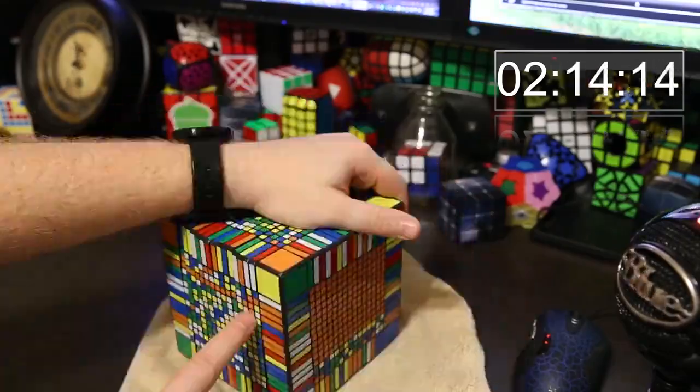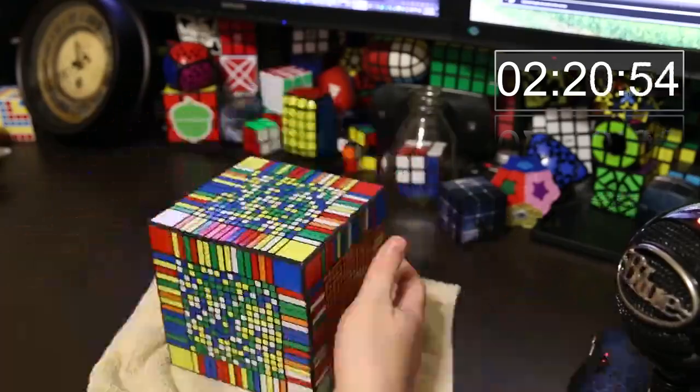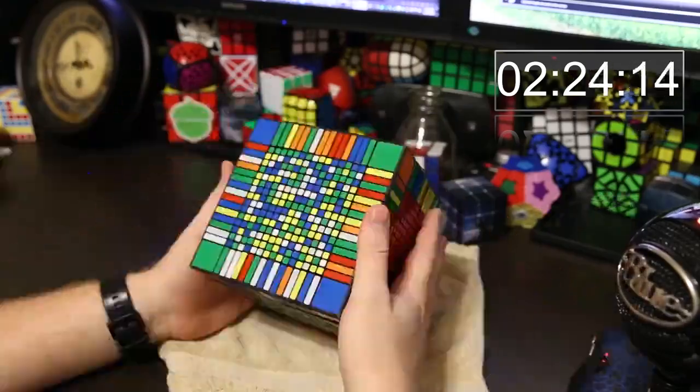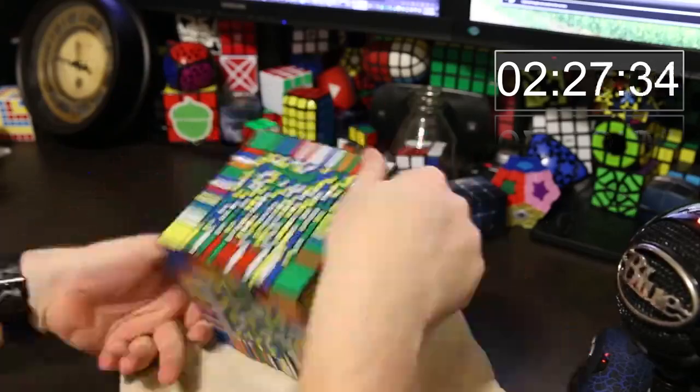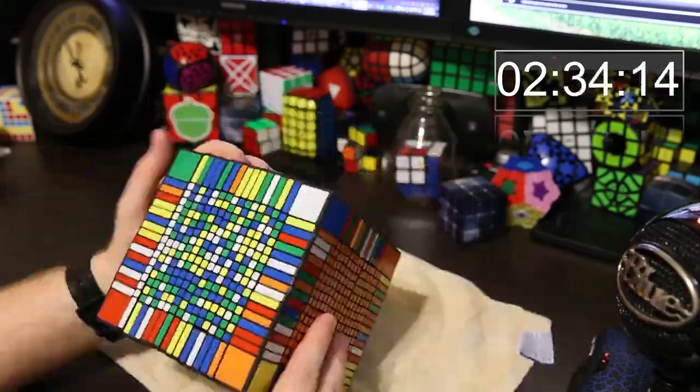But using the reduction method, it took me five days to solve this puzzle, and the first day I solved the red center, the second day I solved the orange center, the opposite side of red is orange, and then I did the white center on that day.